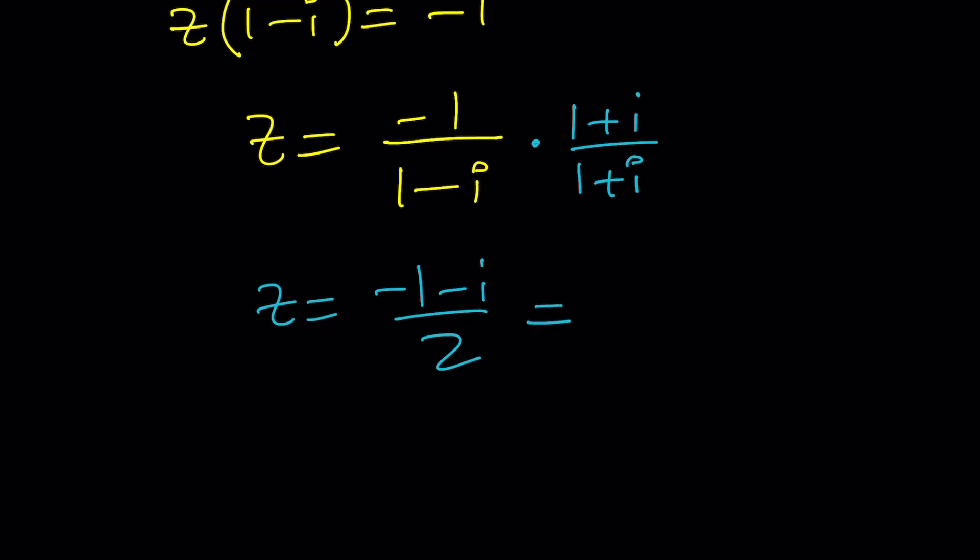And the denominator is going to be two again. And this gives us negative one half. Some people write it as plus minus negative one half. But I'll just write it as minus one half of I. So that's our number.